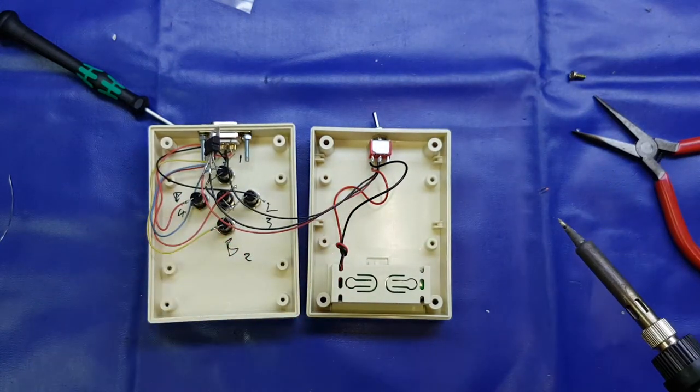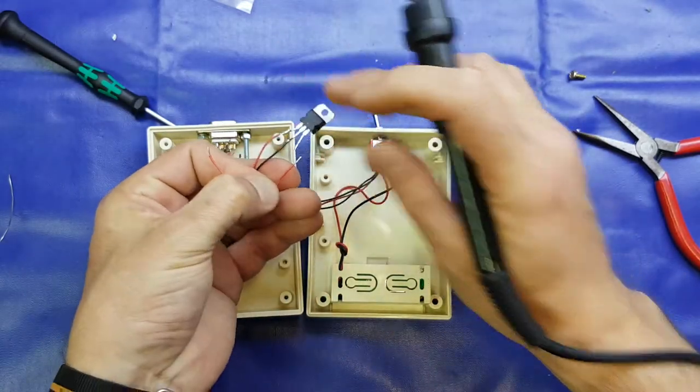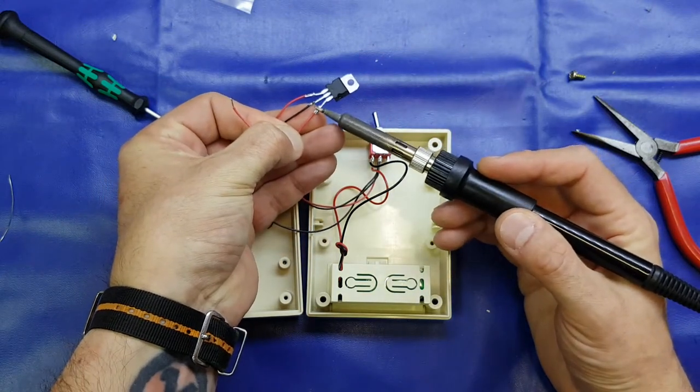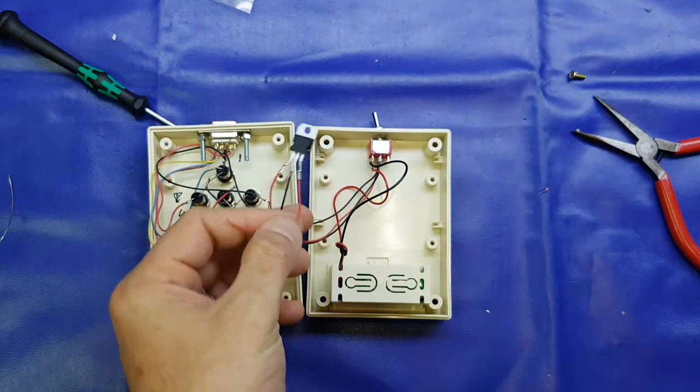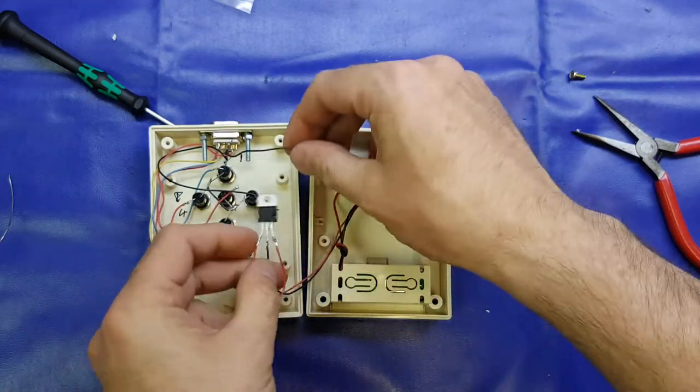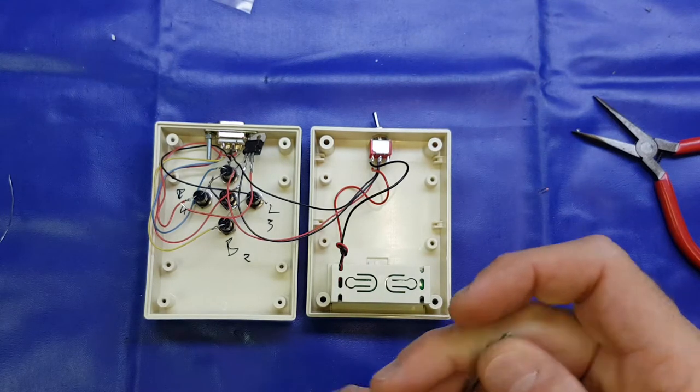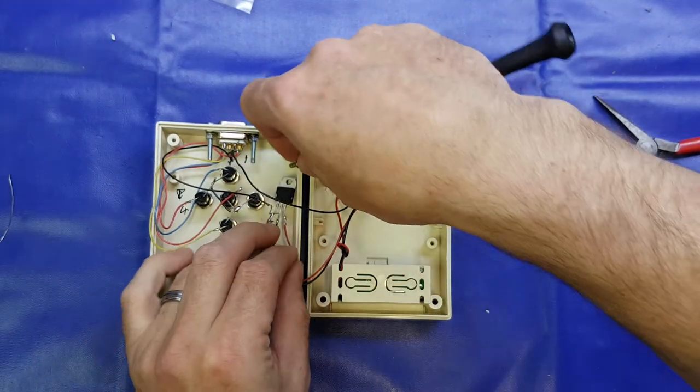The only thing left to do is to pop the output of the regulator onto the common anodes of the LEDs. And then we should be in business. So I'm just going to pop this in here. Got a screw ready.